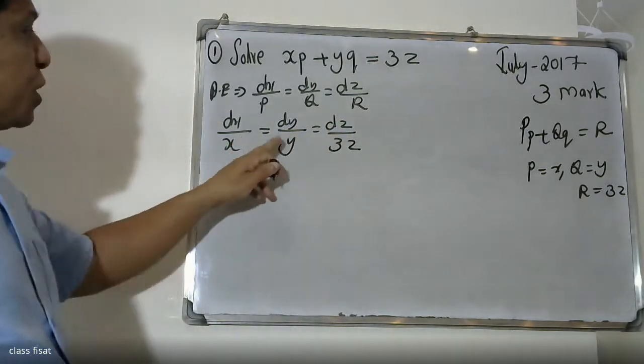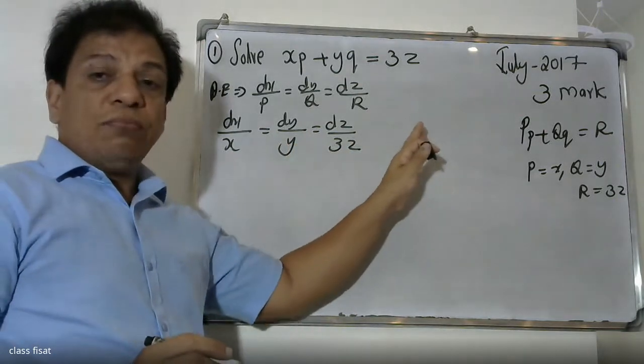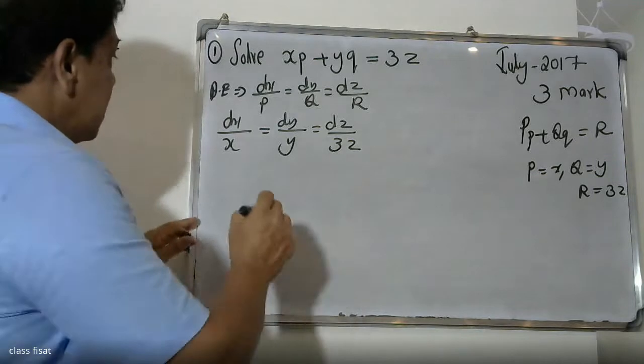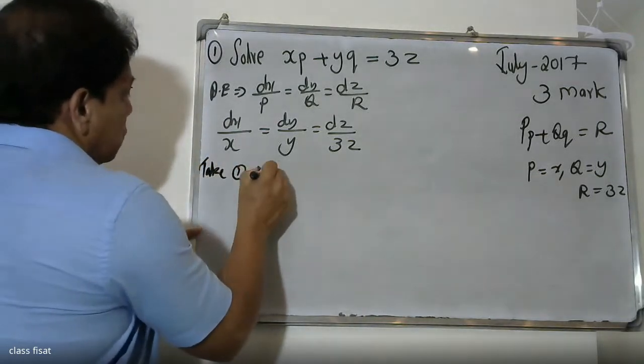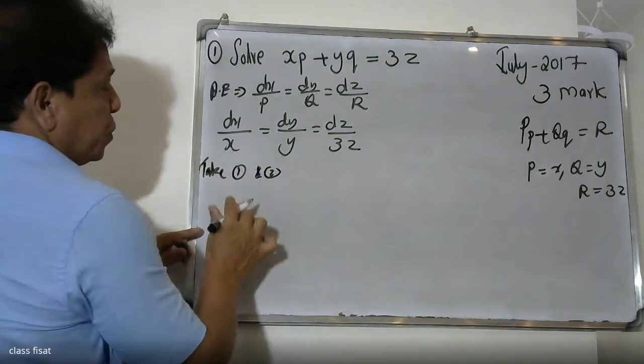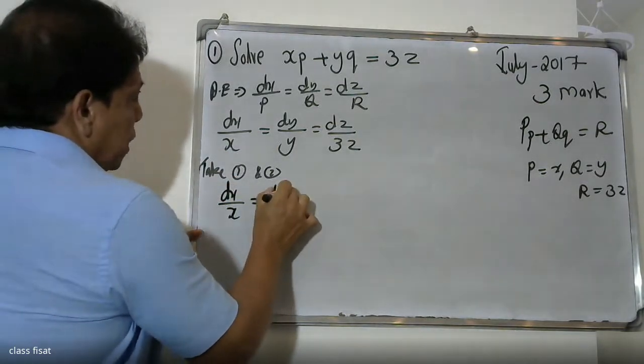This is the first ratio, second ratio, third ratio. This is the solution. A is a constant, B is a constant. Take one ratio. First ratio, second ratio. dX by X equals dY by Y.